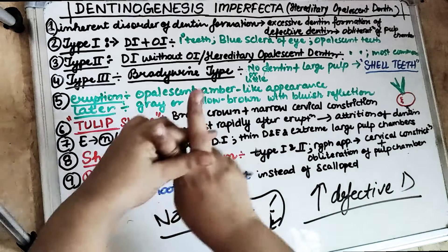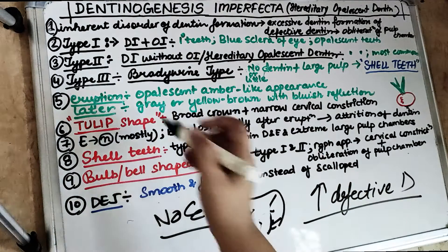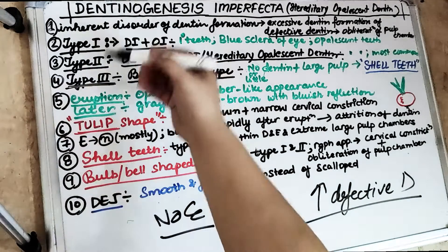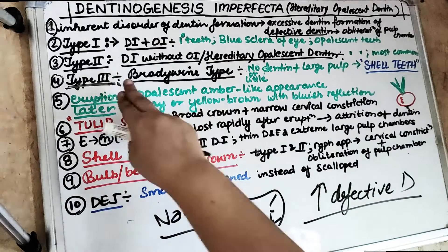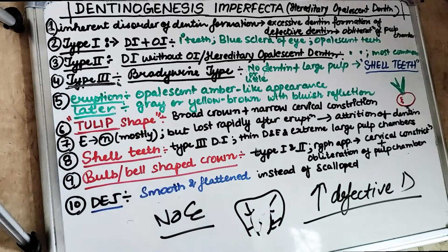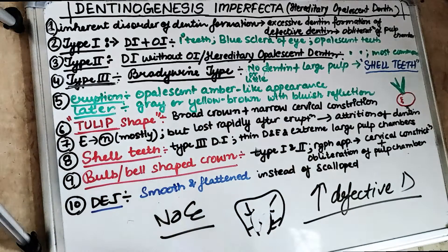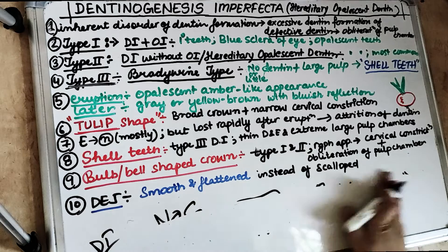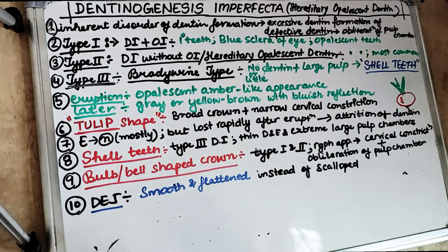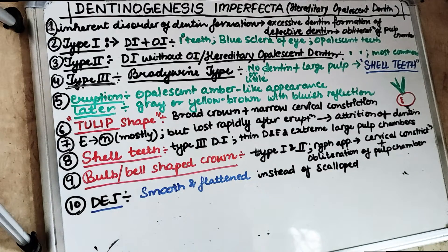Now, there are two important things in Dentinogenesis Imperfecta. Type 3 DI has features that are completely opposite to the other types. So wherever DI is written without qualification, we are referring to the general Dentinogenesis Imperfecta. To summarize point 1: it is an inherent disorder of dentine formation with excessive defective dentine causing obliteration of the pulp chamber and root canals.